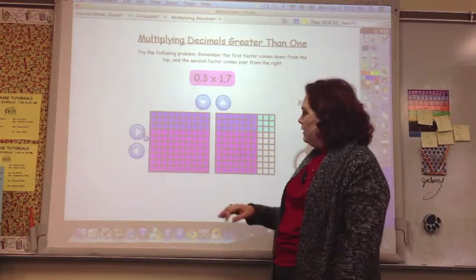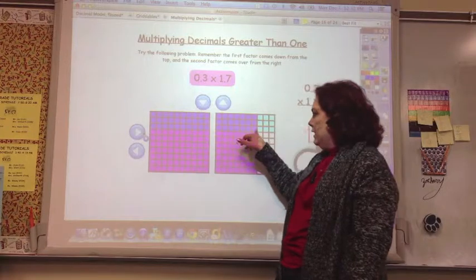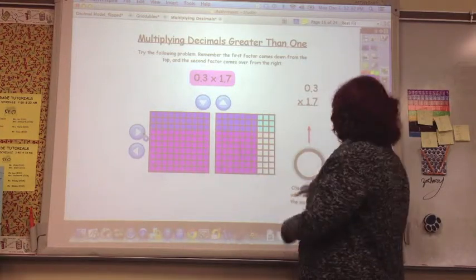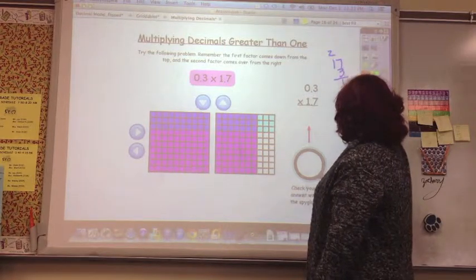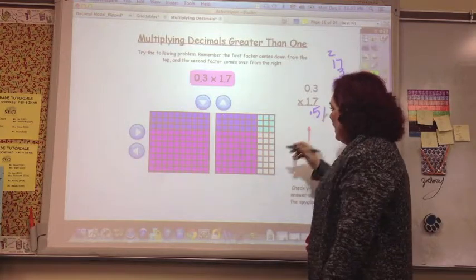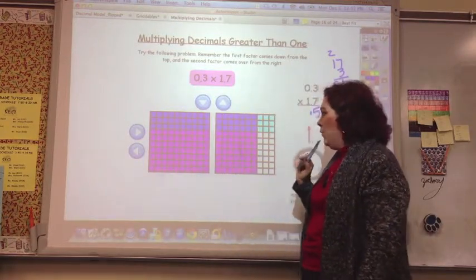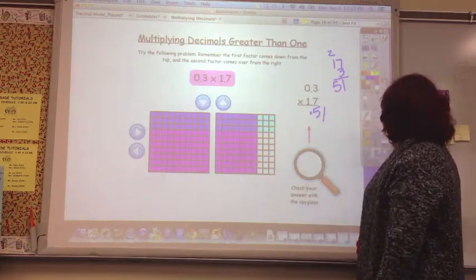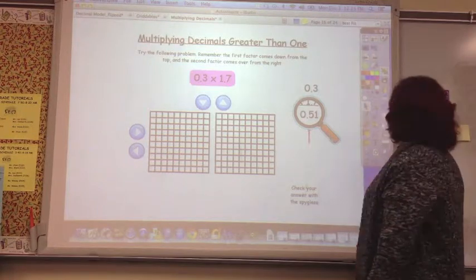And so we've got 3 times 17, right? So 3 times 17 is 51. And if we count up all of these hundredths, it would be 51 hundredths. And let's see if that's what our spyglass says. Yes, it does. 51 hundredths.